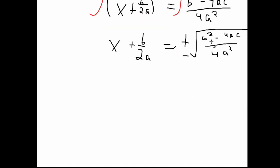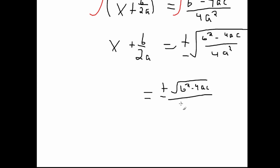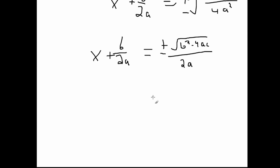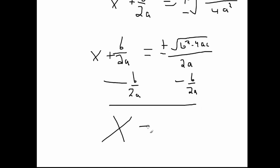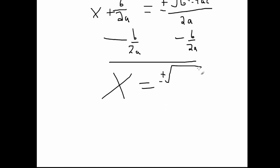We can simplify the right side further by distributing the square root sign over the numerator and the denominator separately. This gives us plus or minus the square root of b squared minus 4ac, over 2a — since the square root of 4 is 2 and the square root of a squared is a. Now we just need to get rid of the b over 2a on the left side. Subtracting b over 2a from both sides gives us x equals plus or minus the square root of b squared minus 4ac over 2a, minus b over 2a.